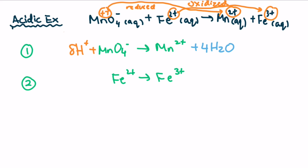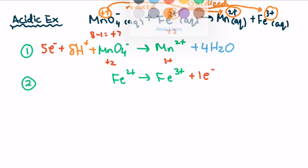Step number five: we're going to balance all of the charge by adding electrons to each side of the equation. In equation number one, we have 8+ minus 1, so we have a +7 charge on the left. On the right side, we have a +2 charge. So from +7 to +2, we have to add five electrons on the left side — seven minus five is plus two. And in equation number two, we have Fe2+ on the left, Fe3+ on the right, so we add one electron to the right side. Now we have all the charge balanced.